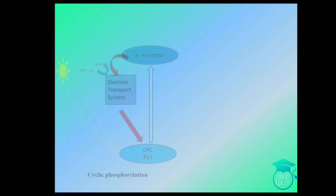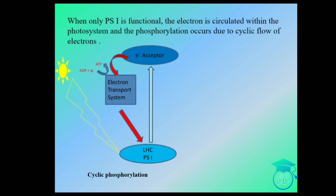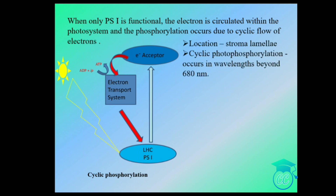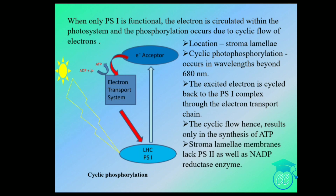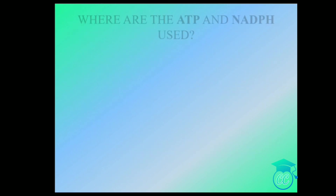In cyclic photophosphorylation, only PS1 is functioning. The electrons are circulated within the photosystem and phosphorylation occurs due to this cyclic flow of electrons. Cyclic phosphorylation occurs in stroma lamella at wavelengths beyond 680 nm. The excited electron is circulated back to the PS1 complex through the electron transport chain. The cyclic flow results only in the synthesis of ATP, because stroma lamella lacks PS2 and NADP reductase enzyme, so NADPH is not produced.